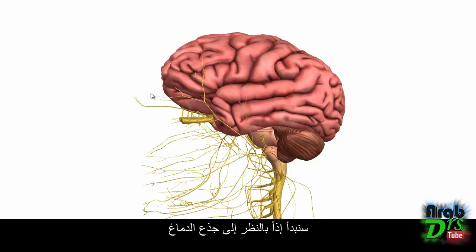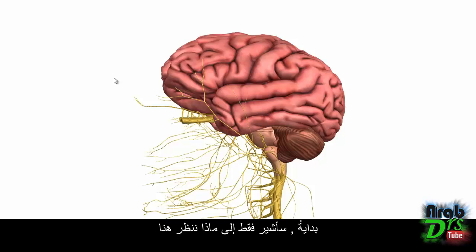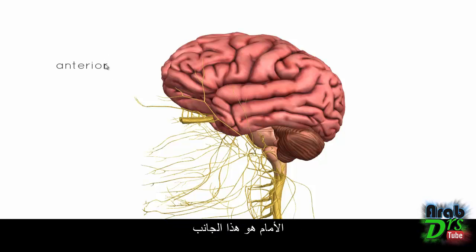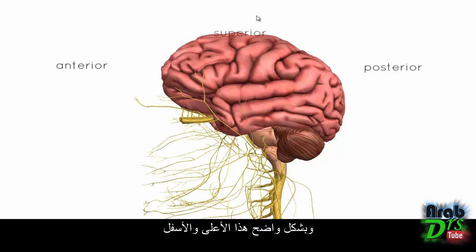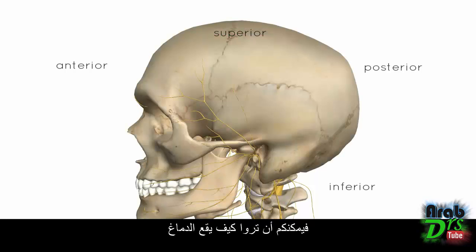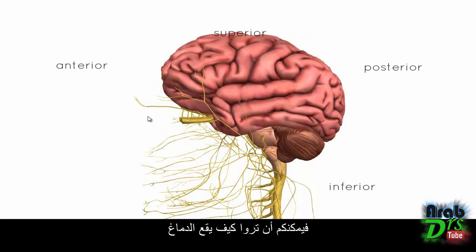We'll start off by looking at the brainstem. We're looking at a side view of the brain — anterior is this side, posterior is this side, and obviously superior and inferior. So you can see the brain and how it sits there.